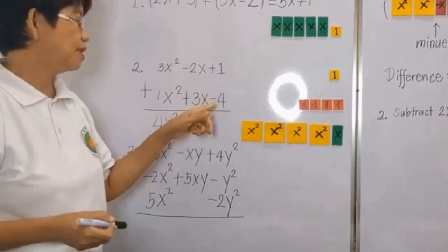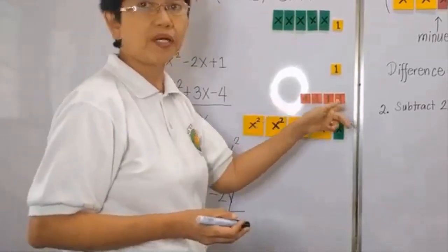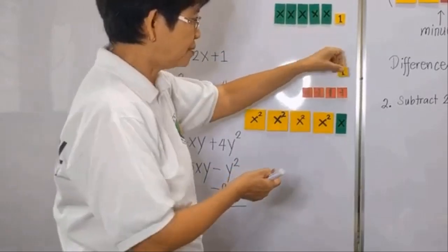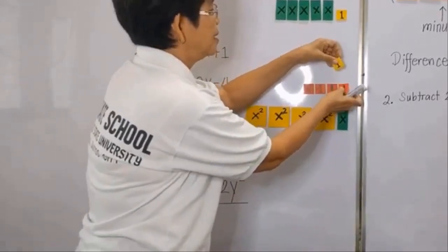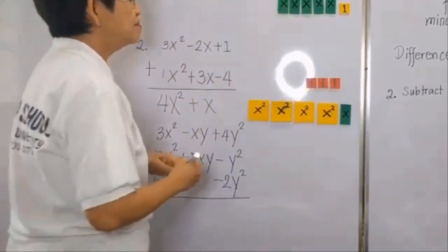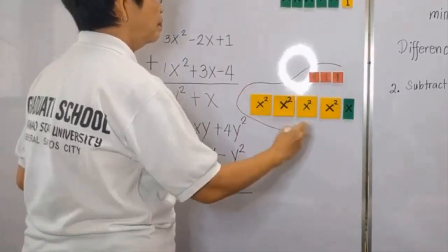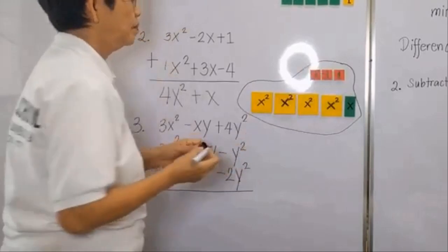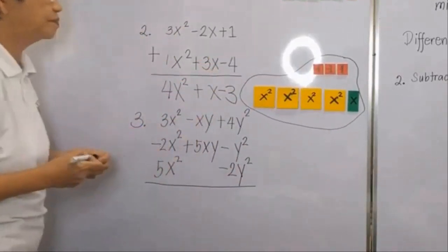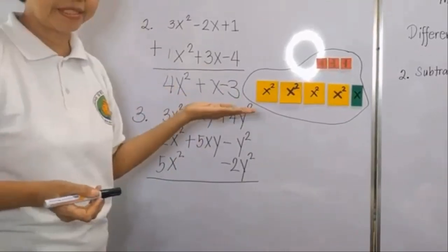Then negative 4 plus 1. Since we have 4 negatives and only 1 positive, we can only have 1 zero pair, and we set this aside. What is left gives us minus 3. The answer is 4x squared plus x minus 3.